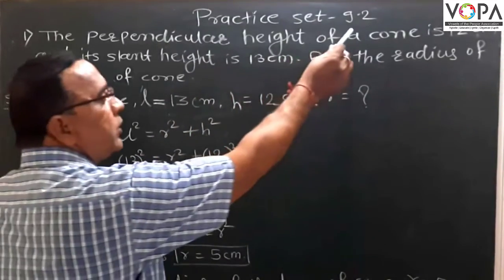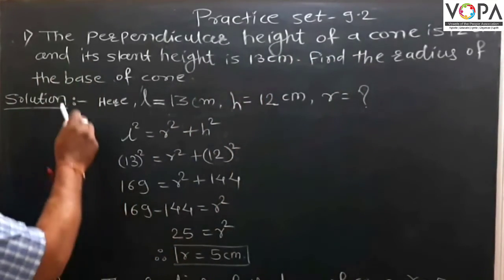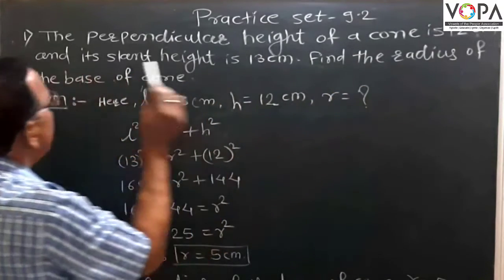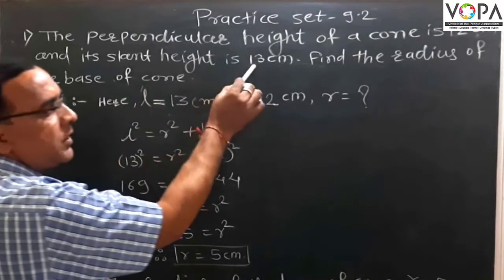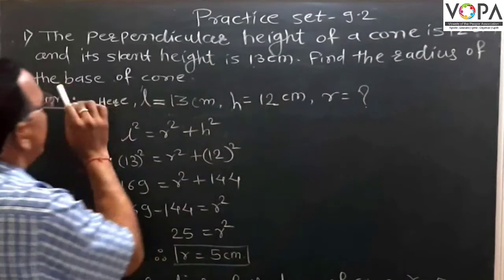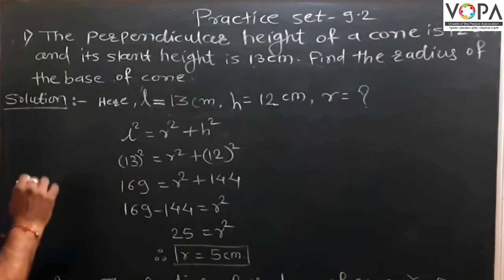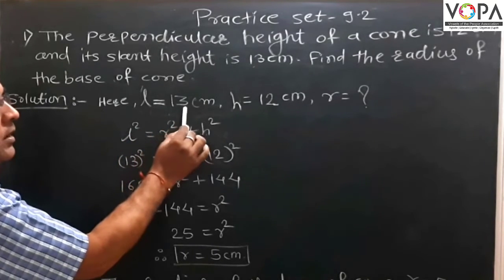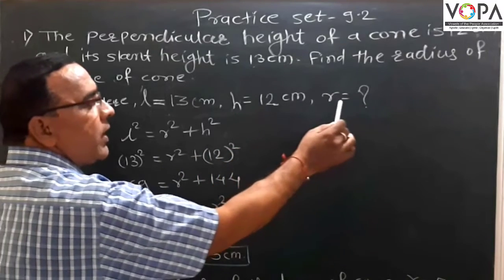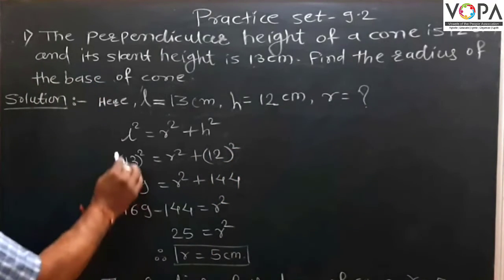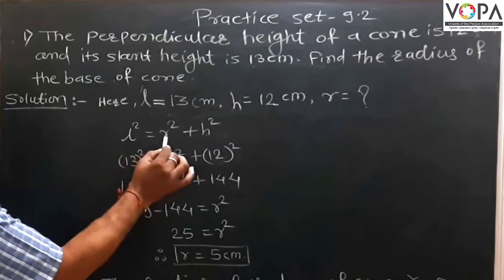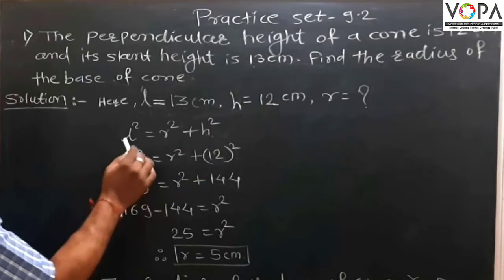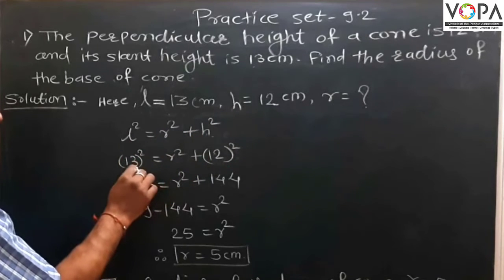In practice set 9.2, problem 1: the perpendicular height of a cone is 12 cm and its slant height is 13 cm. Find the radius of the base of the cone. Solution: here L = 13 cm, S = 12 cm, and we need to find R. By the formula, L² = R² + H².